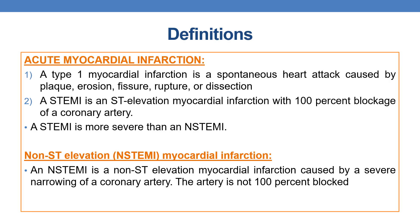First is acute myocardial infarction. Acute myocardial infarction is a Type 1 MI — it is a spontaneous heart attack caused by plaque erosion, fissure, rupture, or dissection. A ST elevation myocardial infarction, or STEMI, is an ST elevation myocardial infarction with 100% blockage of the coronary artery.